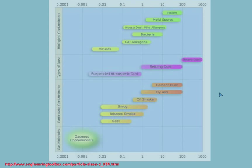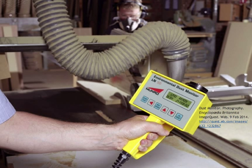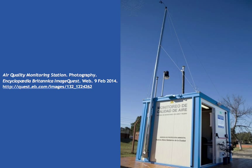Particulate matter can come from multiple sources in all countries. In many countries, industries are required by law to mitigate the release of particulates using devices like electrostatic precipitators, and dust monitors like this are used in both indoor and outdoor environments to monitor air quality.